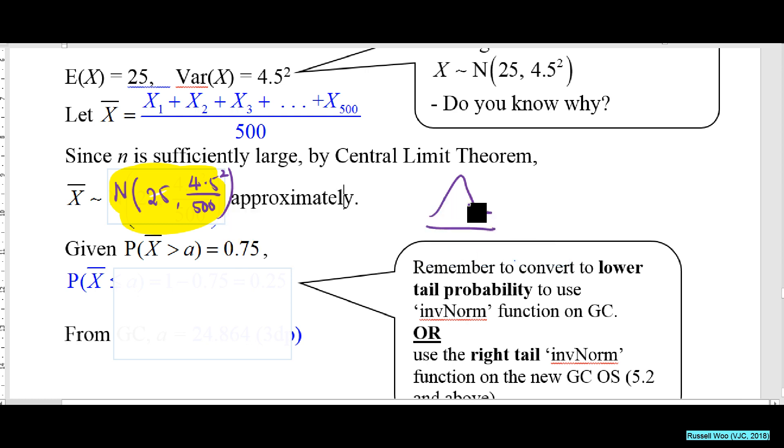You want this to be 0.75, but you cannot tell the GC 0.75. You must tell the GC that I want this area to be 0.25, then the GC will give you this value. Got it? So you convert it to lower tail. Can we very quickly find the answer? Inverse norm and we can get the answer.